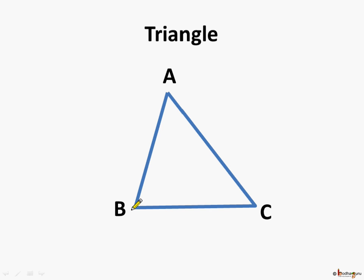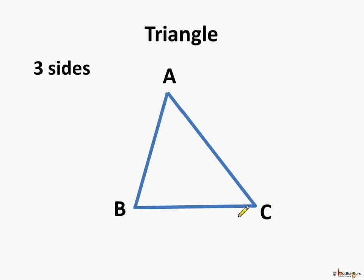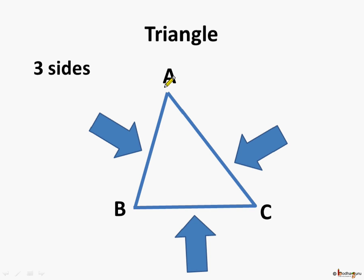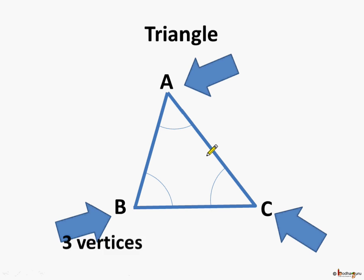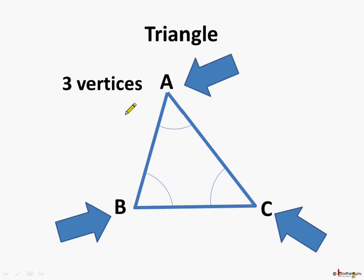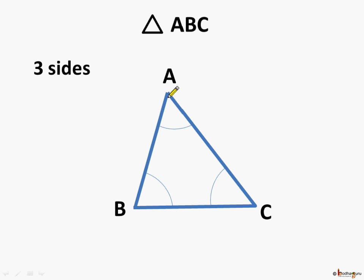Here, this is a triangle and it has three sides. These are the three sides of the triangle. A triangle has three corners, or we can say it has three vertices. This is vertex A, vertex B, and vertex C. This is a triangle which is called triangle ABC.